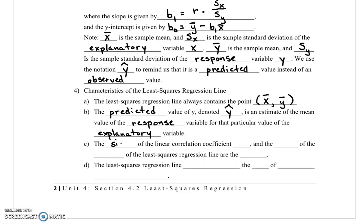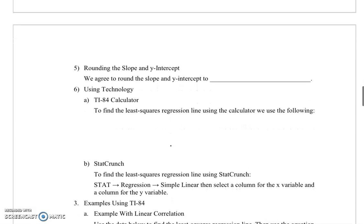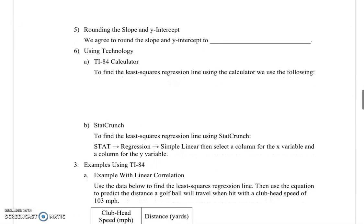The sign of the correlation coefficient r and the sign of the slope of the least squares regression line are always the same. Another property is that the least squares regression line minimizes the sum of the squared residuals. We've already talked about that.